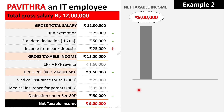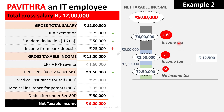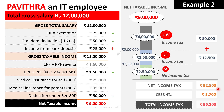Now computing income tax for Pavitra on nine lakhs: first slab — 2.5 lakhs, no tax; second slab — 2.5 to 5 lakhs, five percent on 2.5 lakhs equals twelve thousand five hundred; third slab — 5 to 9 lakhs, twenty percent on four lakhs equals eighty thousand. Total income tax is ninety-two thousand five hundred. Applying a cess of four percent, the total income tax Pavitra needs to pay is ninety-six thousand two hundred rupees.